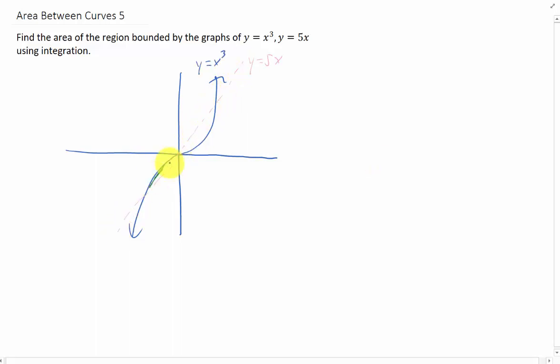And once again, to find the areas in between these two curves, we need to split up our integral into two pieces. One from this intersection point to 0, and another integral from 0 up to this intersection point.